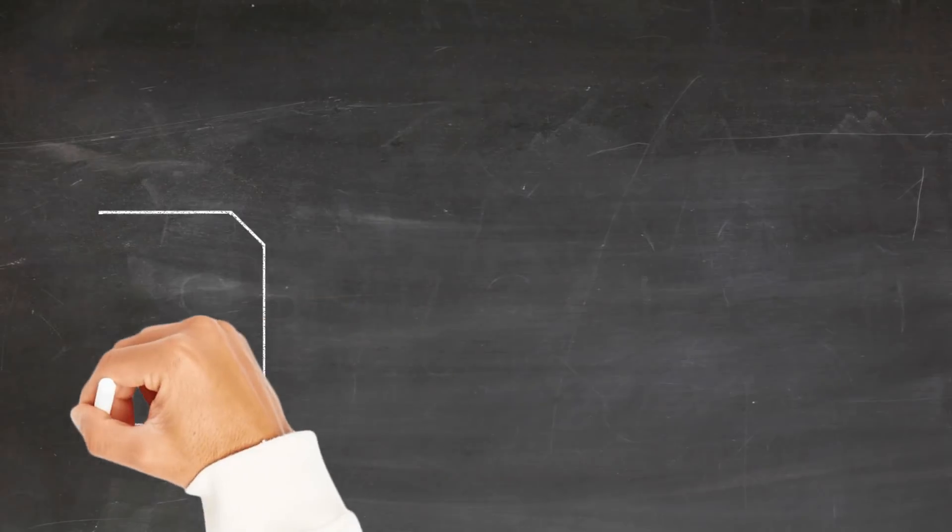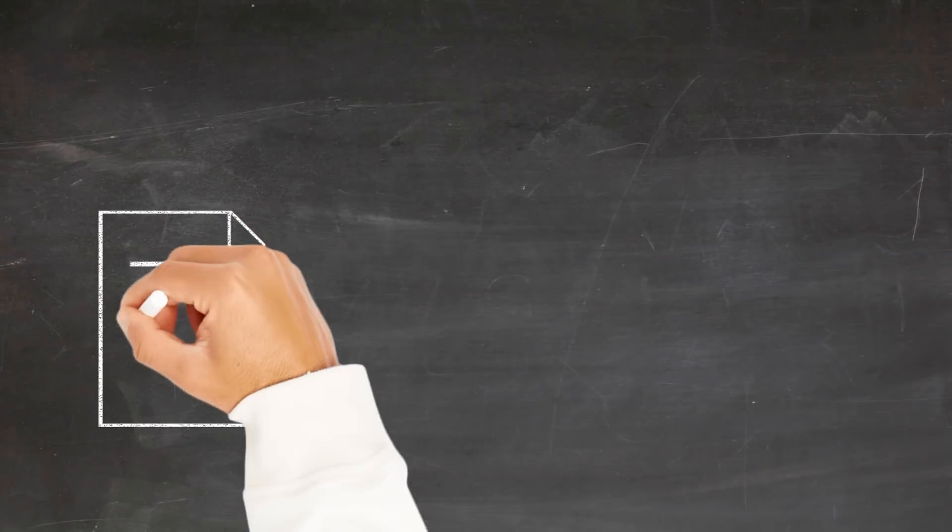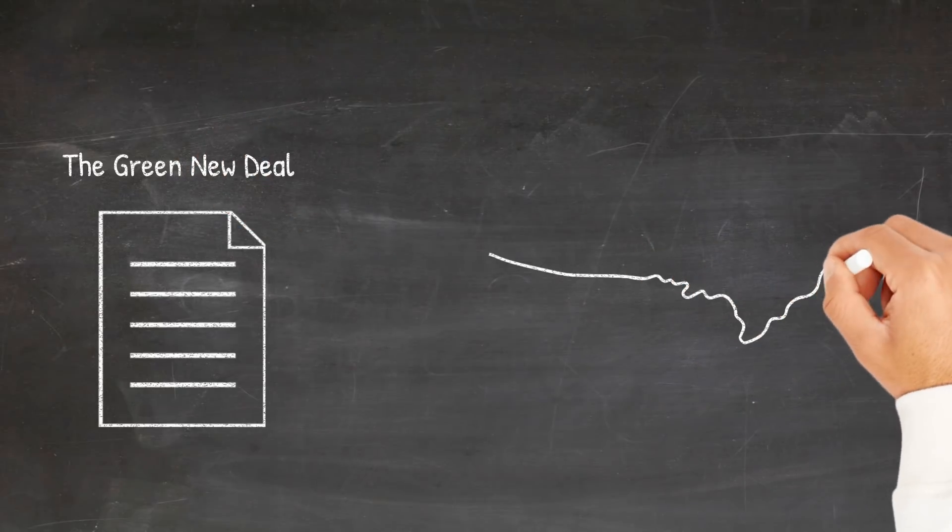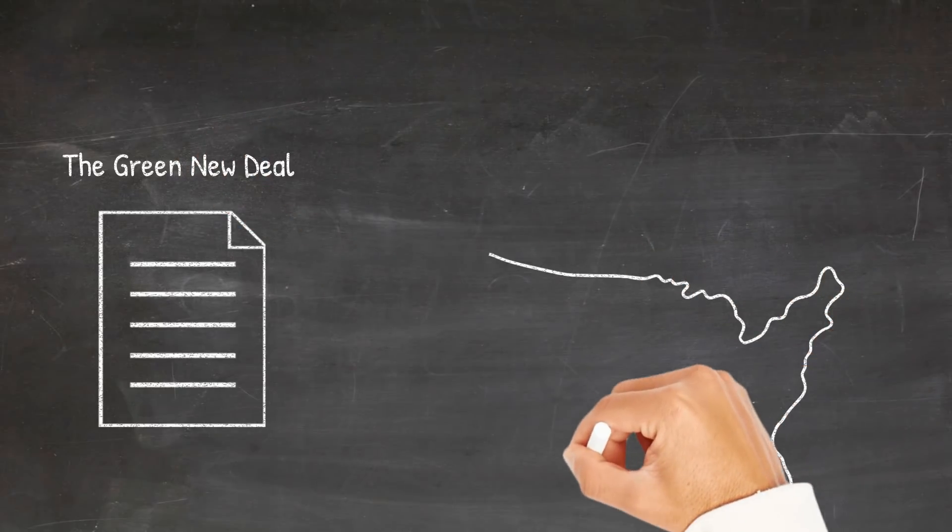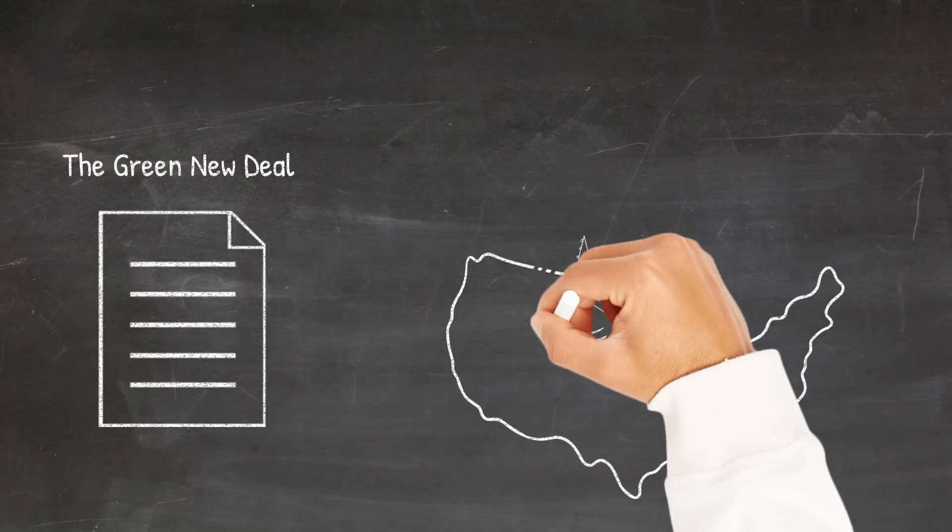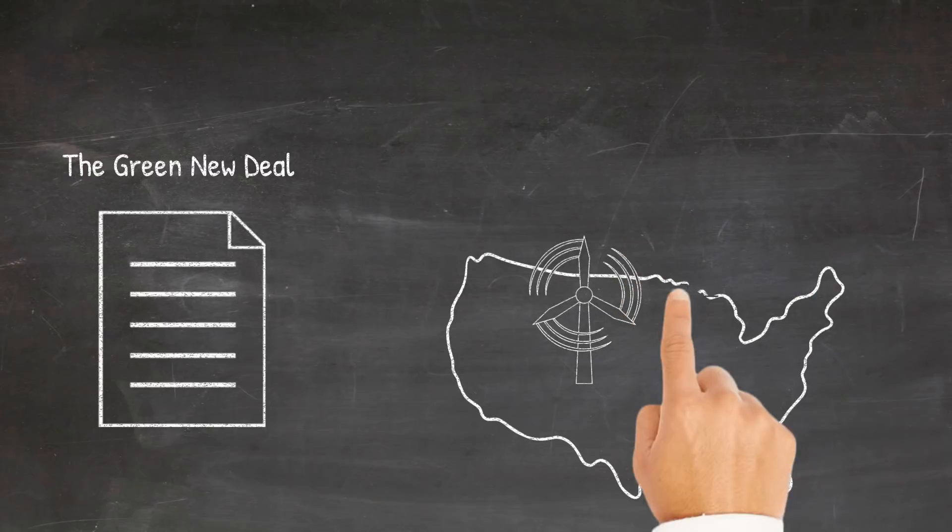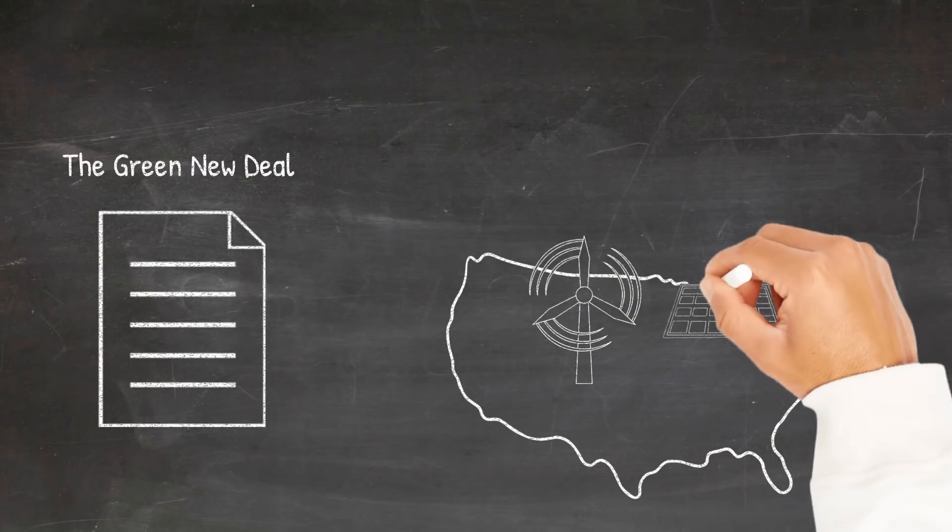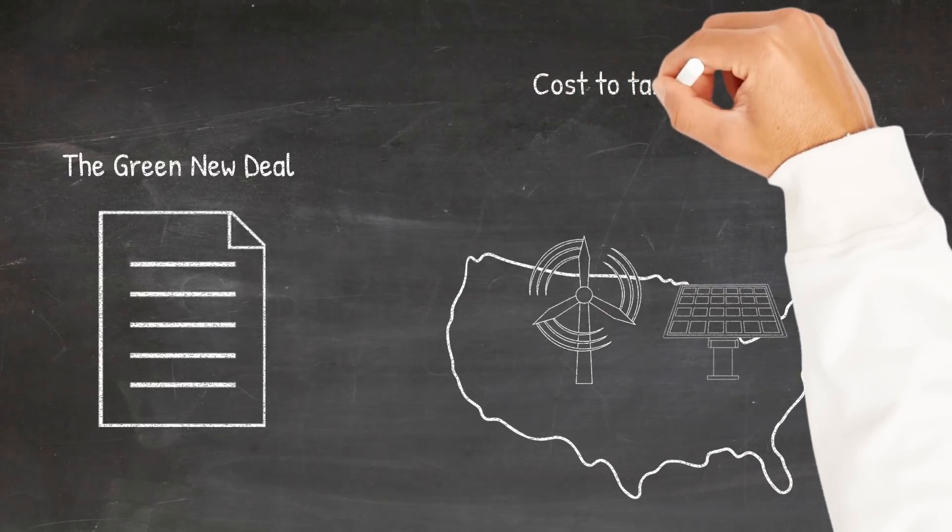Originally proposed in 2019, the Green New Deal has found new support among progressives in Washington. Just one component of the Green New Deal, meeting 100% of U.S. power demand through renewable and zero-emission sources, would cost ratepayers and taxpayers an estimated $490 billion annually.